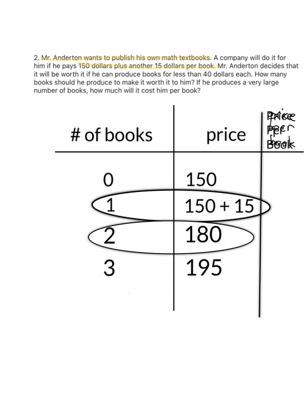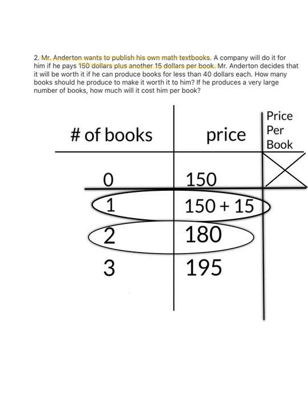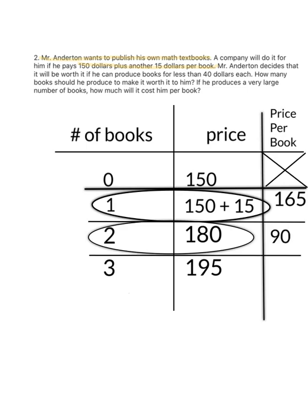Right, and he wants to know how many books he should produce to make it worth it if he can do it for less than $40 each. Well, zero books for $150 is obviously no good. One book for $165, that's not less than $40 each. Two books, this is $90 each. So we want to know how many books should he produce to make it worthwhile for him, and worthwhile means it's got to be less than $40 a book. And then there's a follow-up question saying if he produces a very large number of books, how much will it cost him per book?